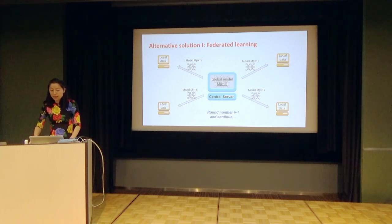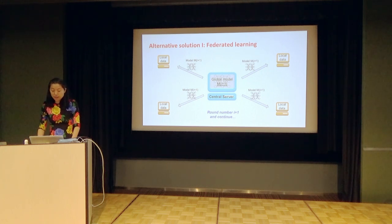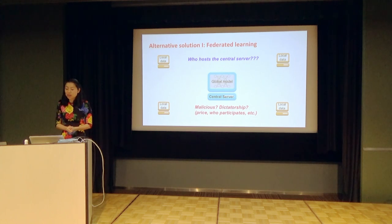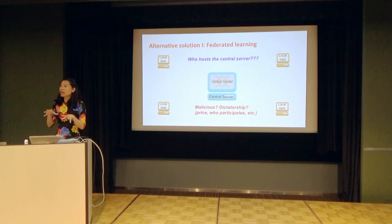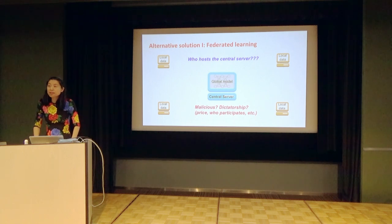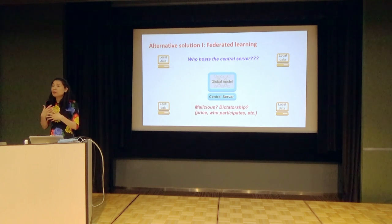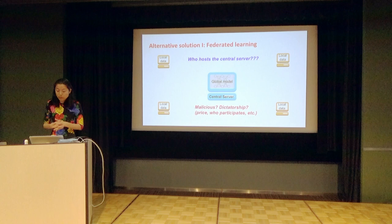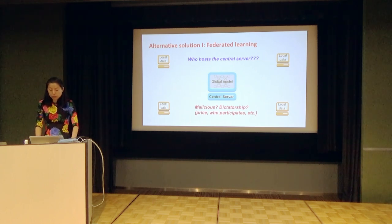In this way, the advantage is that each user's data is stored locally and not uploaded to the cloud or central server. But it still needs a central server to coordinate federated learning. There are challenges when using this approach — for example, when different banks want to collaborate, one question is who should host the central server. Ideally, you don't want to rely on any central trust. And also, relying on the central server can create issues if it becomes malicious or gives the central server some unfair advantage.